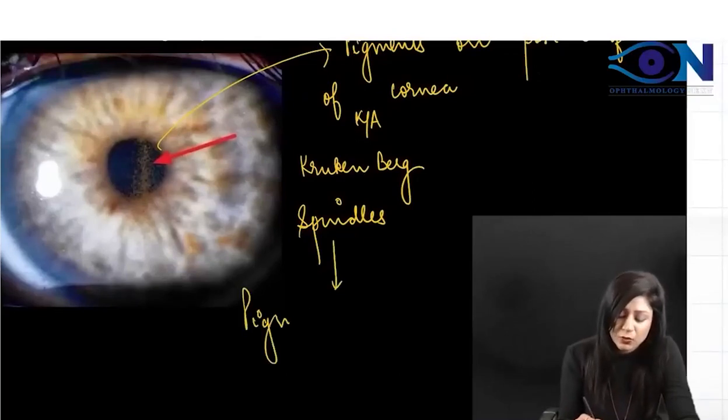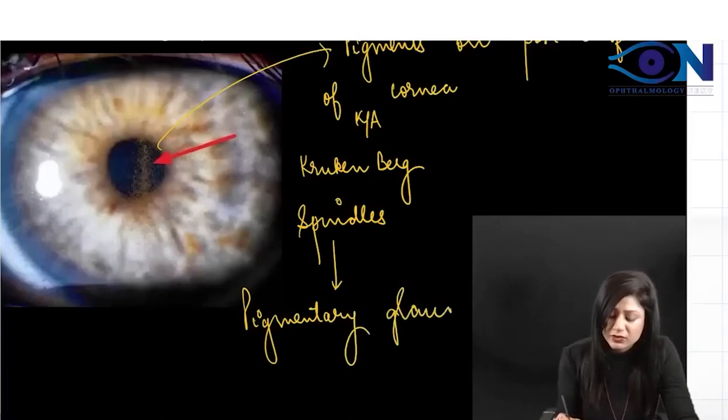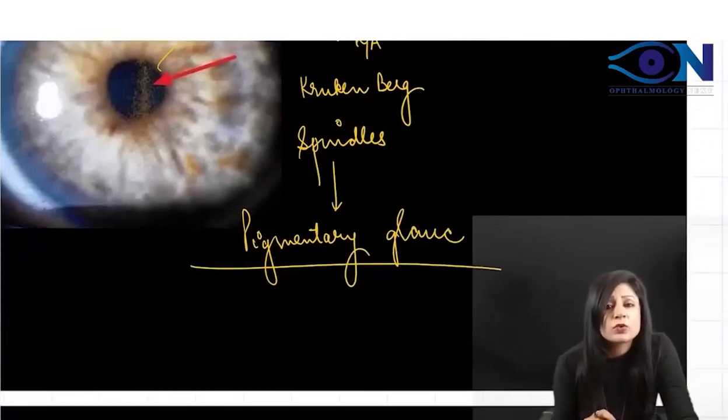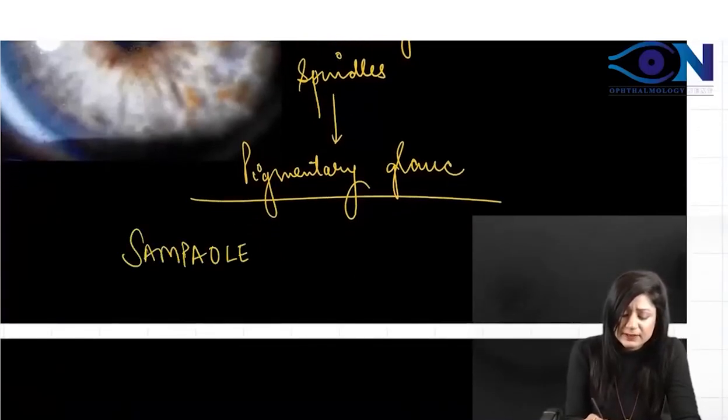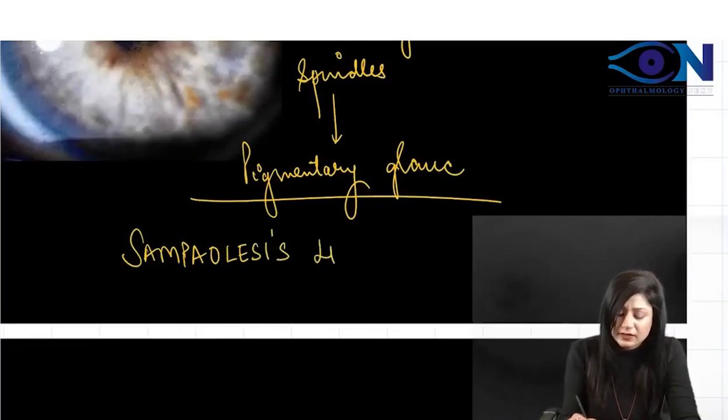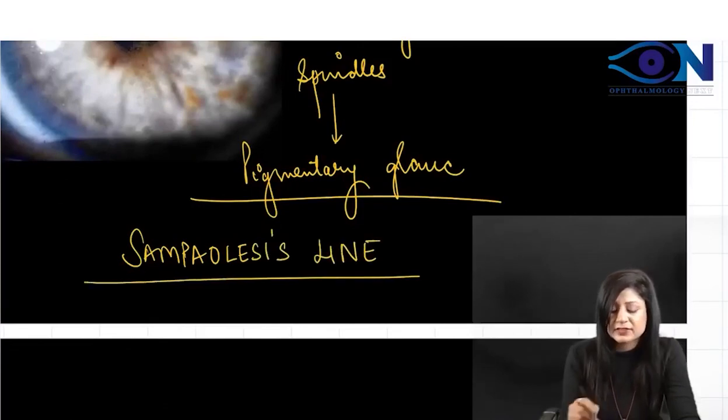They are present in pigmentary glaucoma, which is important for 2023. When you get Krukenberg spindles, another important sign is Sampaolesi line.